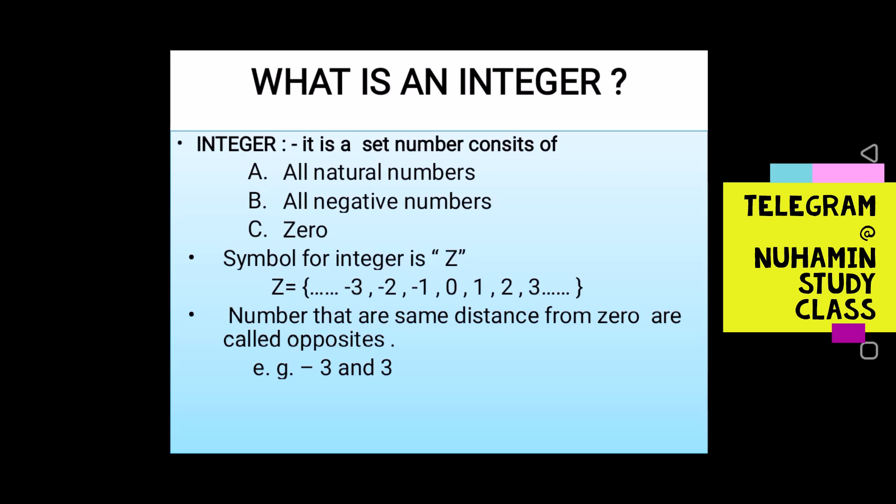The negative number will be equal to the negative of the same value. In the integer set Z, there are negative Z and positive Z. If Z is in the set, we have negative Z and positive Z, and they are opposites.